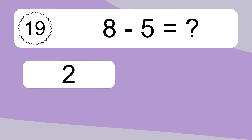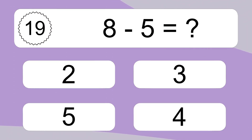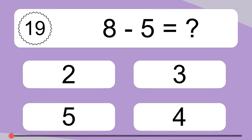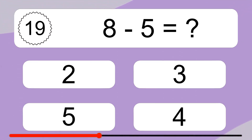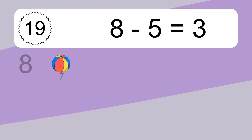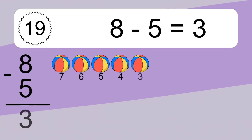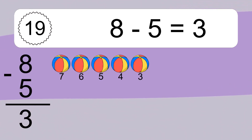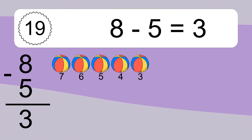8 minus 5 equals what? 8 minus 5 equals 3. Let's count it. 7, 6, 5, 4, 3.